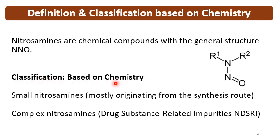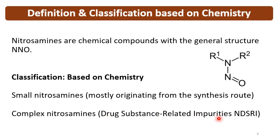The classification based on chemistry: if you see the chemistry of these Nitrosamine impurities, you will find that there are small Nitrosamines and some complex Nitrosamines. Small Nitrosamines generally originate from the synthesis route, while complex Nitrosamines with larger structures originate from the API — the Drug Substance Related Impurities — and these are called NDSRI: Nitrosamine Drug Substance Related Impurities.